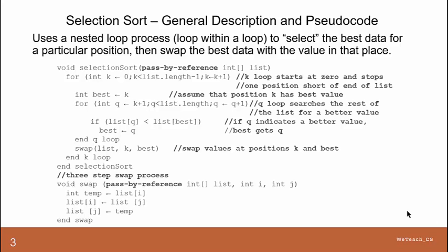Before we get into the code, here is the three-step swap process that brings in a list, and then two positions, and exchanges those two values. A temporary variable gets the value at one of the positions. That position gets the value at the other position. And then the other position gets the value of the temp, effectively swapping the two positions. That is called right here in the pseudocode process.